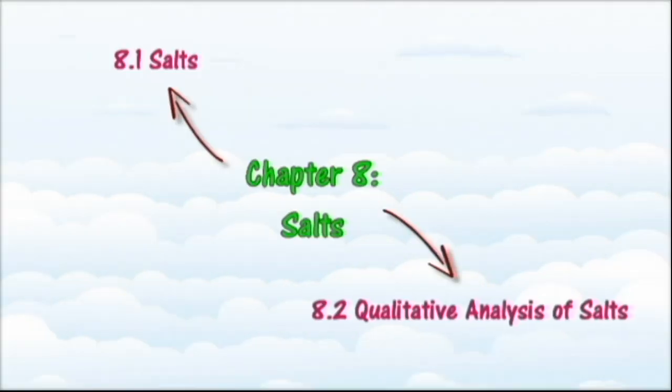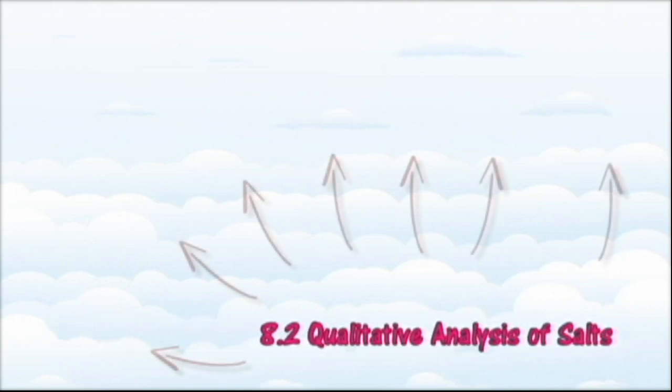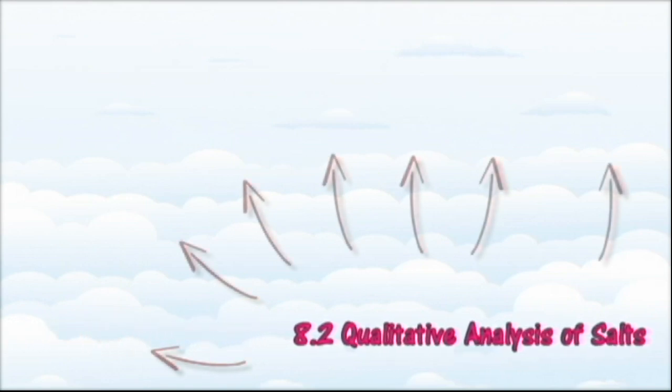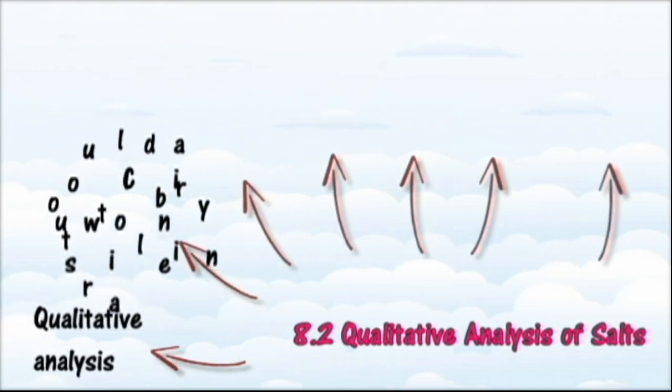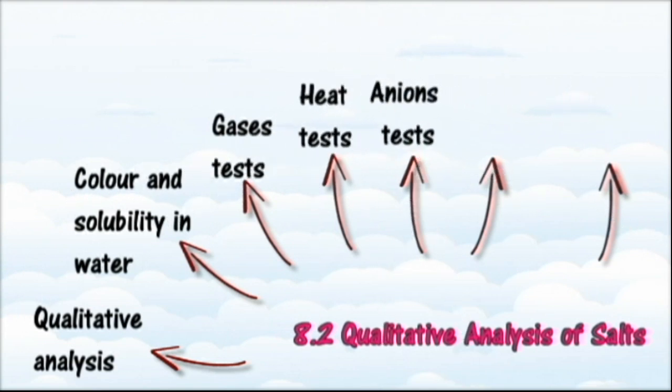In Section 8.2, we will learn about confirmatory tests for different cations and anions. At the end of this section, you should be able to state the meaning of qualitative analysis, make inferences on salts based on their color and solubility in water, describe tests for the identification of gases, and describe the action of heat on salts and tests for anions.